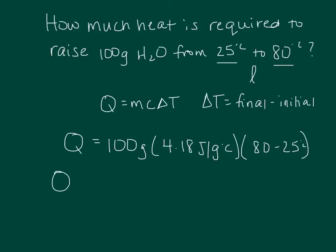Now we just plug and chug. So 100 times 4.18, and our grams are going to cancel. Our degrees Celsius are going to cancel, so we're going to be left with joules in our unit, which is what we want. Our Q is either going to be in kilojoules or joules, depending on what it asks for. So 100 times 4.18 times 80 minus 25.